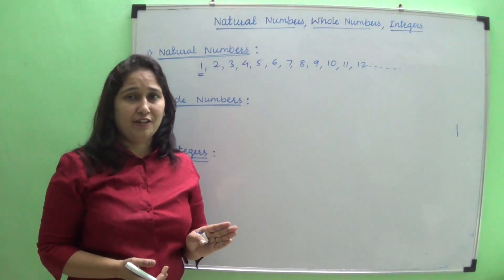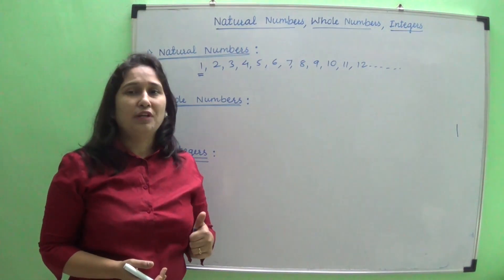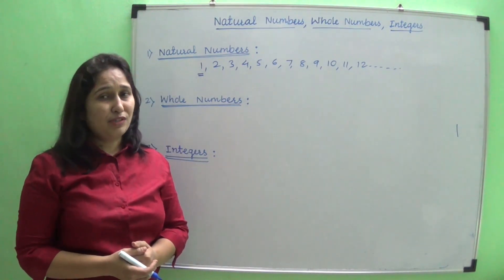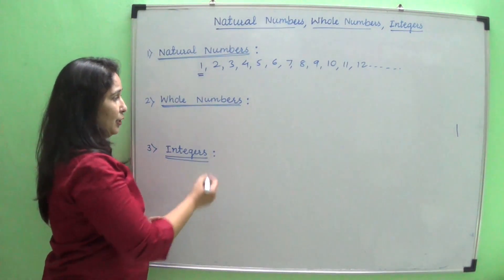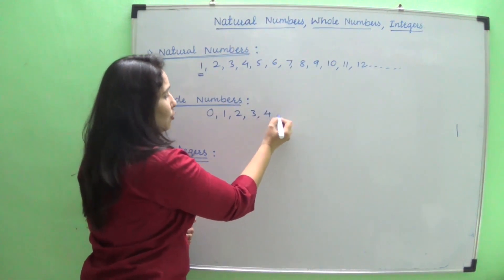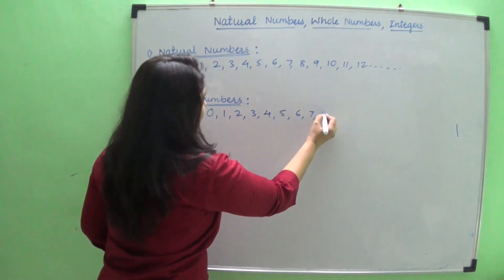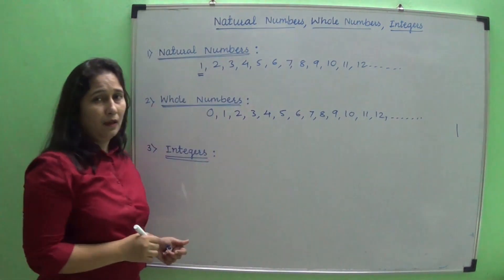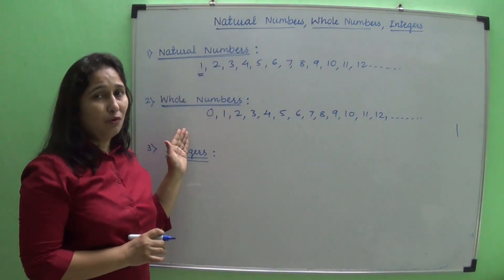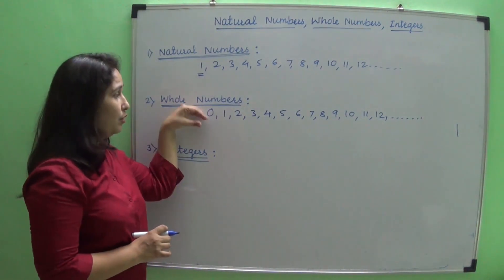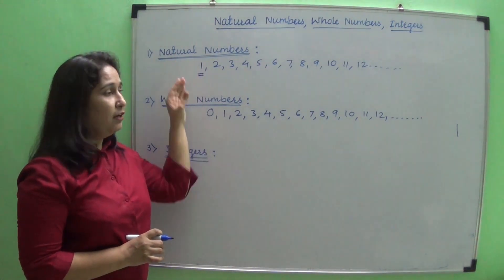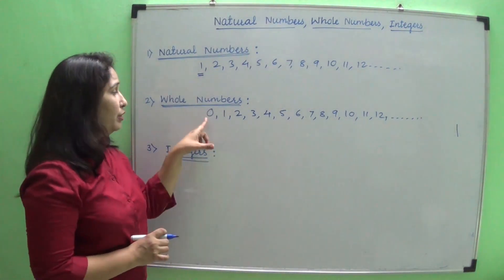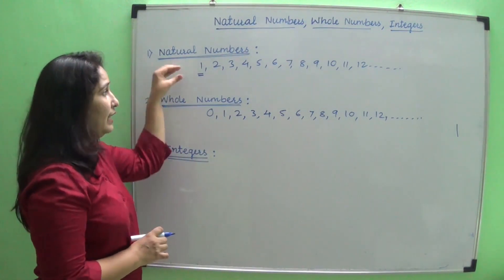Now let's learn about whole numbers. Whole numbers start from zero and extend towards infinity: 0, 1, 2, 3, 4, 5, 6, 7, 8, 9, 10, 11, 12, and so on. The difference between natural numbers and whole numbers is that when we include zero in the natural number set, we get the whole number set.